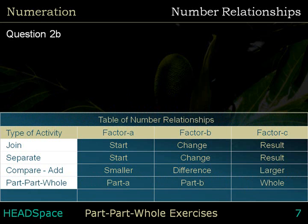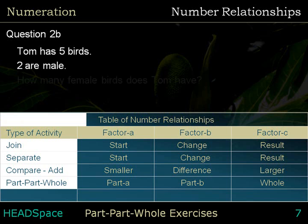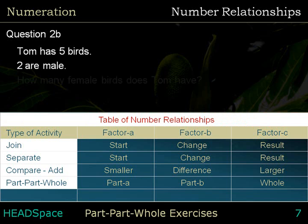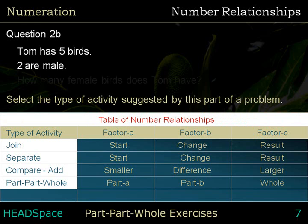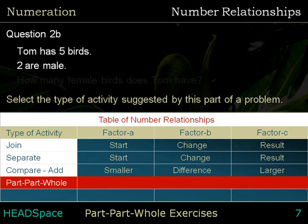Here is a partial problem: Tom has 5 birds. 2 are male. Table of Number Relationships — select the type of activity suggested by this part of a problem. The answer is: Part Part Whole. In a Part Part Whole problem, Part A and Part B make the whole.